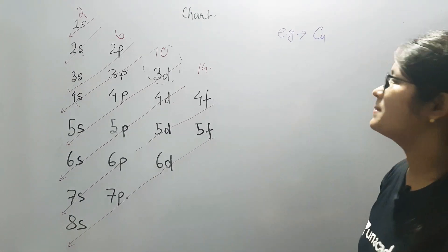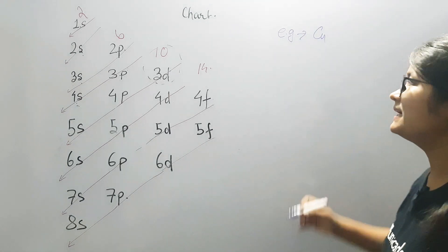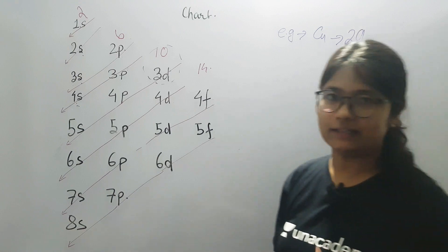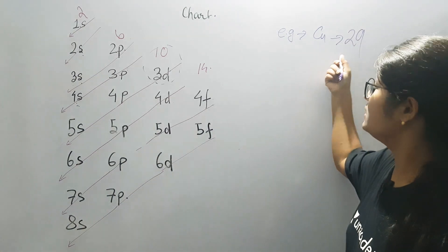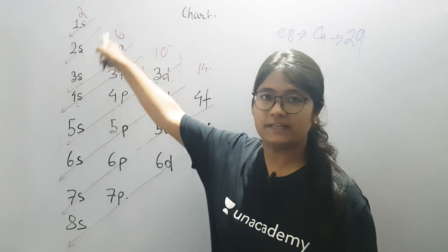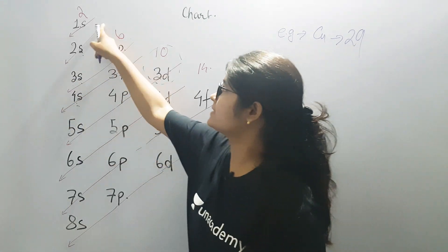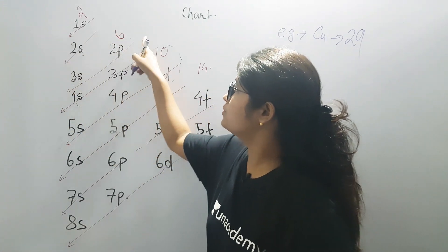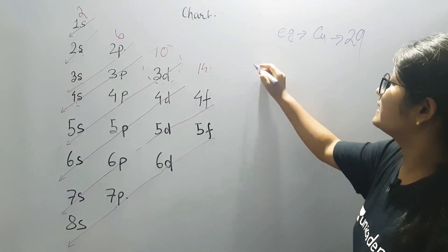Let us take copper. We know the atomic number of copper is 29, zinc is 30. Now if we have seen 29 in the previous classes, we arrange 1s2, 2s2, 2p6, 3s2. So we will write this for us.